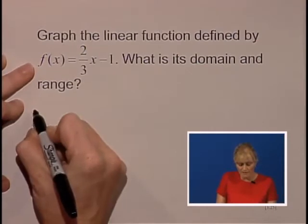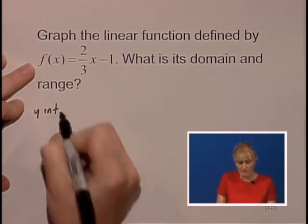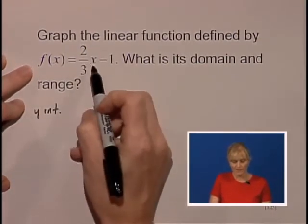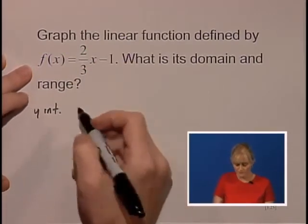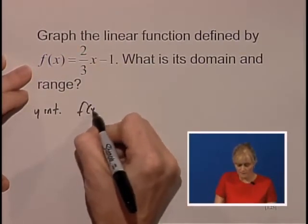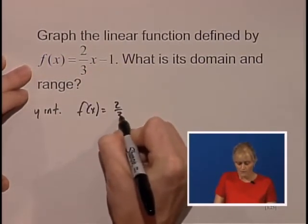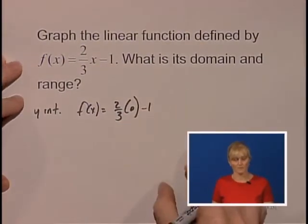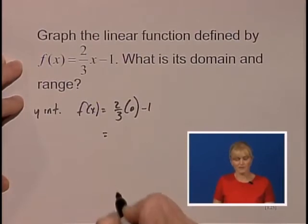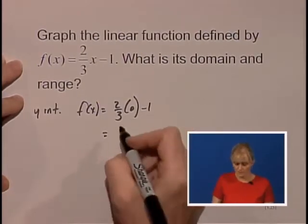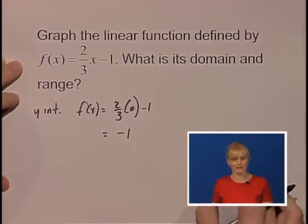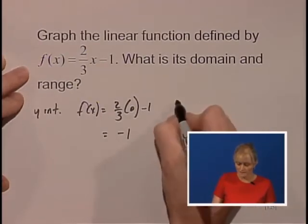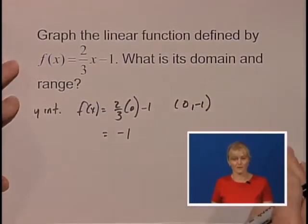We're going to find the y-intercept by replacing x with 0. So we'll have (2/3)(0) - 1. Two-thirds times 0 is 0, and 0 minus 1 is -1. So our y-intercept is (0, -1).